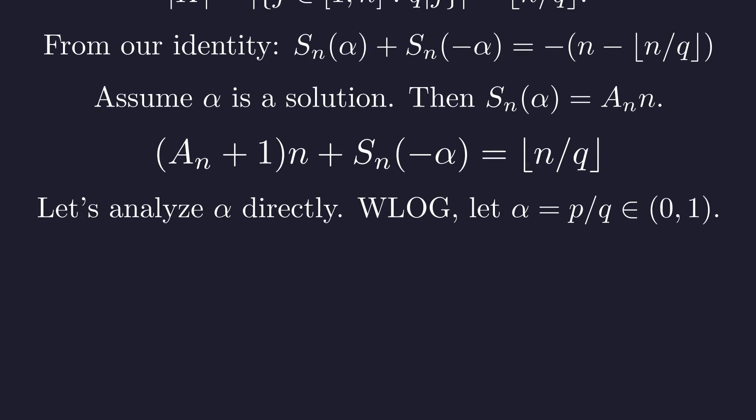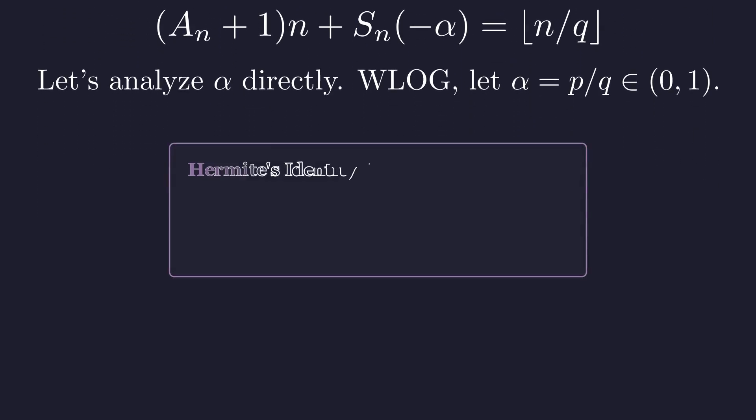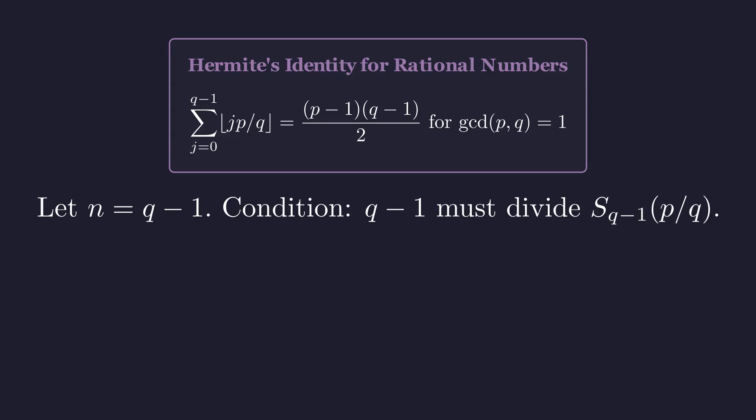As before, we can subtract any even integer from a solution. We can also use the symmetry with its negative. This allows us to analyze any non-integer rational by looking at a related value in the interval 0 to 1. Let's analyze alpha equal to p over q in this interval. A known result for sums of floors of rational multiples is Hermite's identity. It's worth noting the identity starts from j equals 0, but since the floor of 0 is just 0, it gives the same value as our sum, which starts from 1.